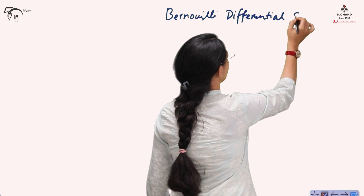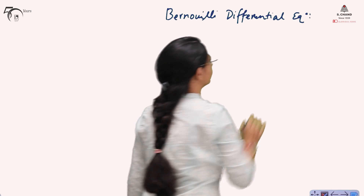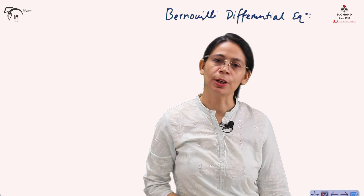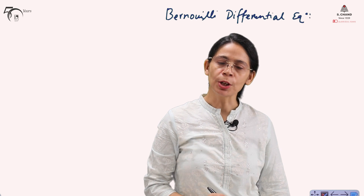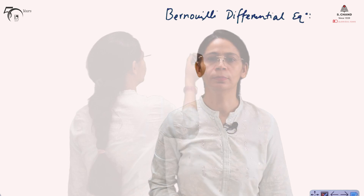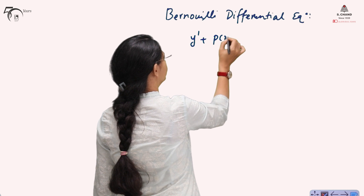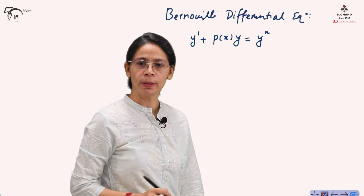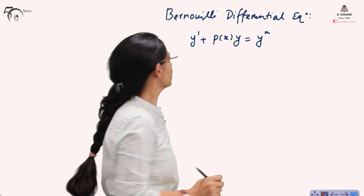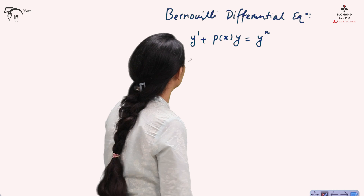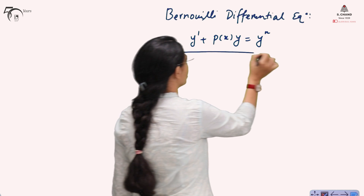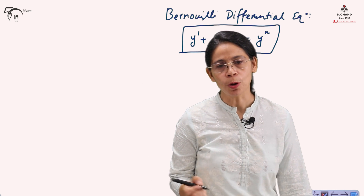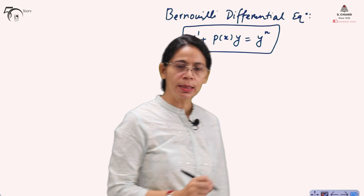Bernoulli Differential Equation — this is named after the mathematician Bernoulli. The differential equation takes the form: y' + p(x)y = y^n. If any differential equation is given in this form, it is called a Bernoulli Differential Equation.